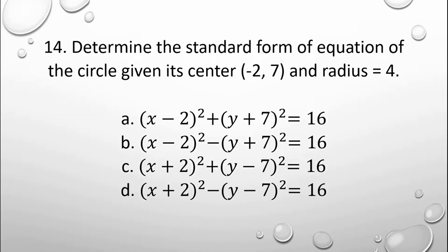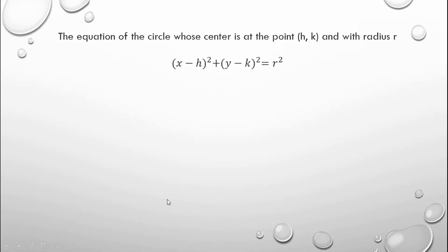For number 14, determine the standard form of equation of the circle given its center negative 2, 7 and radius is equal to 4. For the solution, the equation of the circle whose center is at the point h, k and with radius is x minus h squared plus y minus k squared is equal to r squared.